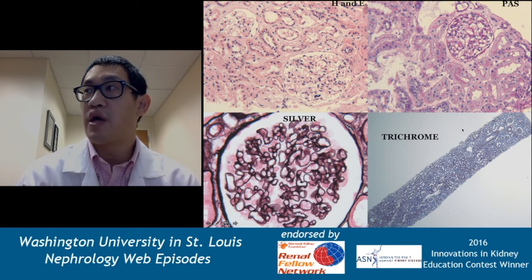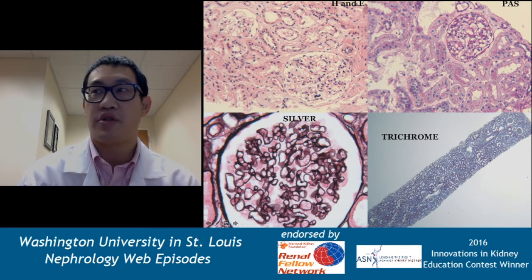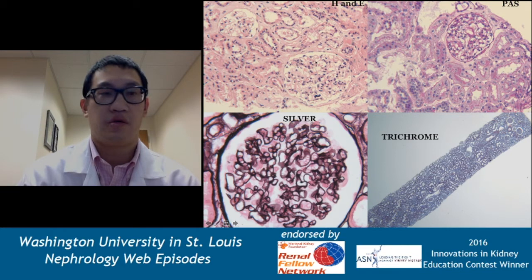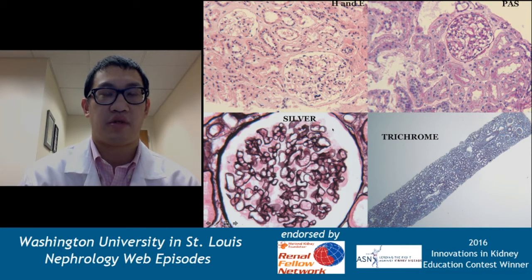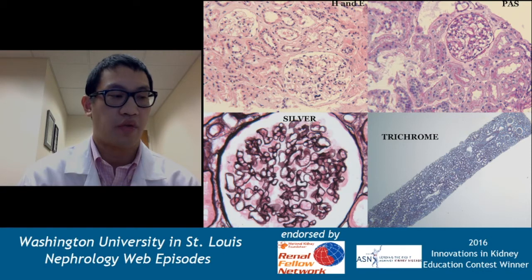When you do a biopsy and you look at the different stains, you have an H&E — that's this one up here on the top left. You have a PAS, which is up there on the top right. A silver on the bottom left, and a low-power trichrome on the bottom right. The trichrome is usually looked at at low power — we'll talk a little bit more about why that is the case.